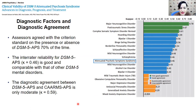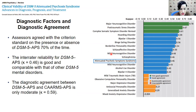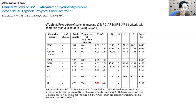The inter-rater reliability for the DSM-5 APS criteria seems quite good and comparable with that of other DSM-5 mental disorders, such as schizophrenia or mild neurocognitive disorder. However, the diagnostic agreement between different scales — in this case, the DSM-5 and CAARMS — is only medium; it's not so good. These subjects also suffer from a lot of psychiatric comorbidity: almost 50% suffer from depressive symptoms, and they can also suffer from bipolar disorder, social phobia in 22% of cases, and anxiety disorders.